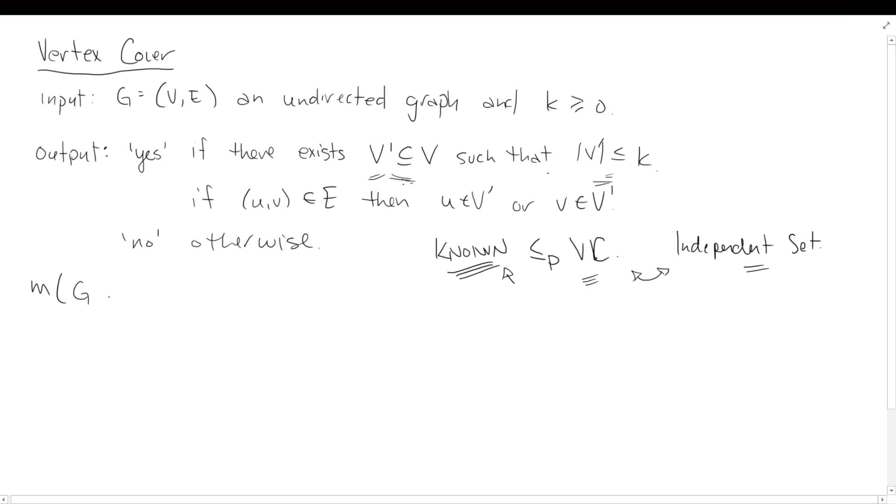So we want to do independent set to vertex cover. So I'm going to take in the input to independent set, which is a graph and K. And down here, I want to return a graph, a different graph maybe. And so here I'll say V prime and E prime, which I might have to set up up here. And the K prime. Which means my mapping needs to do, what is V prime? What is E prime? And what is K prime?